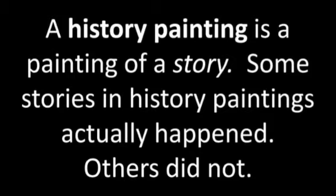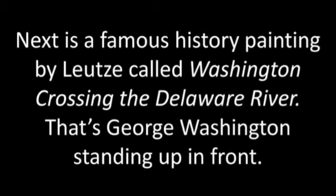A history painting is a painting of a story. Some stories in history paintings actually happened; others did not. This is a famous history painting called Washington Crossing the Delaware River — that's George Washington standing up in front. Rafael's School of Athens is another history painting.